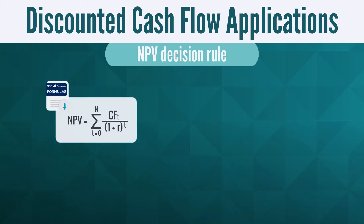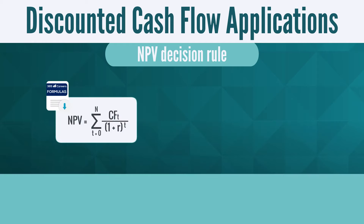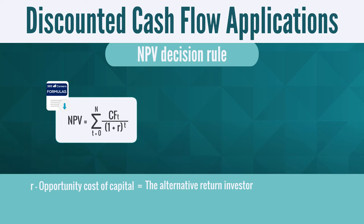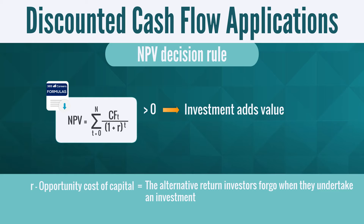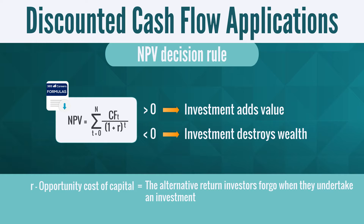What is the rationale behind this rule? When we calculate the NPV of a project, we use the opportunity cost of capital as the discount rate. The opportunity cost is the alternative return investors forego when they undertake an investment. When NPV is positive, the investment adds value because it compensates for more than the opportunity cost of capital. That's why a company undertaking a positive NPV project creates value. The opposite is also valid: accepting negative NPV investments destroys wealth.